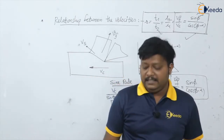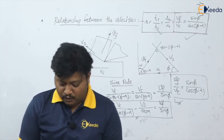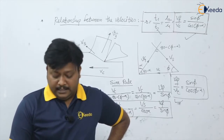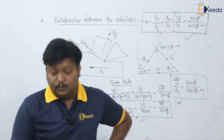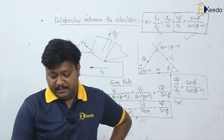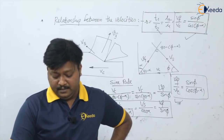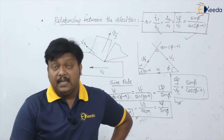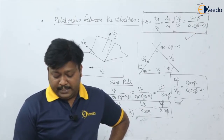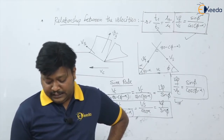Let us take one example. In an orthogonal cutting operation, the following data has been observed: uncut chip thickness is 0.127 mm, width of cut is 6.35 mm, cutting speed is 2 m/s, and rake angle is 10 degrees. We are asked to calculate the shear angle, shear strain, and shear strain rate.